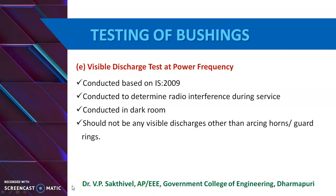Finally, the visible discharge test at power frequency is intended to determine whether the bushing is likely to cause radio interference in service. When the voltage specified in IS 2009 is applied, no discharges other than those from the arcing horns or grading rings should be visible to observers in a dark room. This test is conducted in a dark room, and the test arrangement is the same as that of the withstand test.